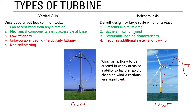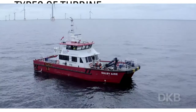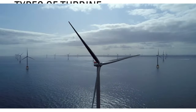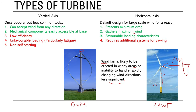Wind farms are built in windy areas, so the inability to handle rapidly changing wind directions is less significant. Yes, a Darrieus turbine can accept wind from any direction very quickly without yawing, but if the wind is changing that quickly, it's not going to be a very good wind farm site anyway. You might just as well find a better place to build — and that is why you very rarely see vertical axis machines anymore.